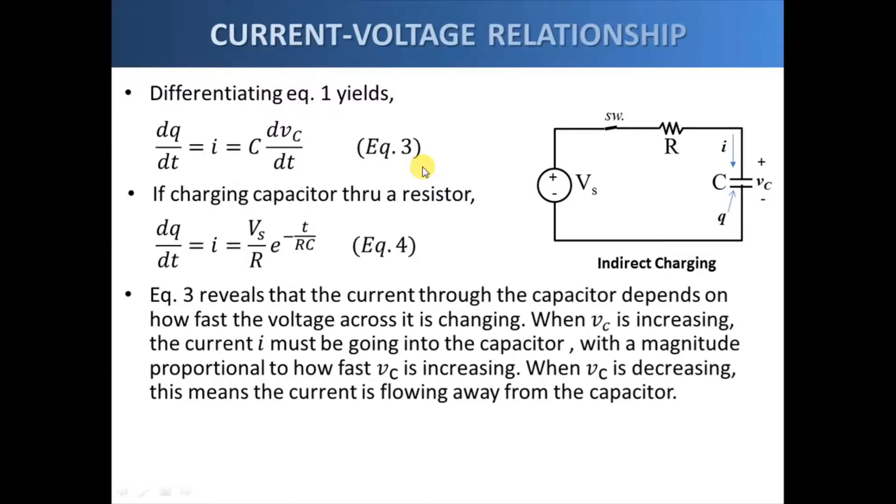Now this equation number 3 tells us several things. First, that the current through the capacitor depends on how fast the voltage is changing. So the higher the change of the voltage, the higher the current. Now when v sub c is increasing, the current is actually directed towards the capacitor that has a magnitude that is proportional to how fast that v sub c is changing or increasing in this case.